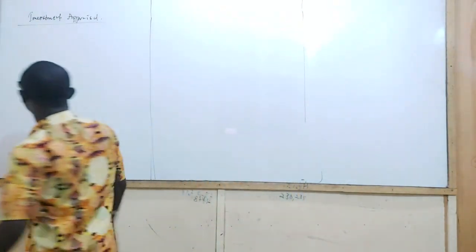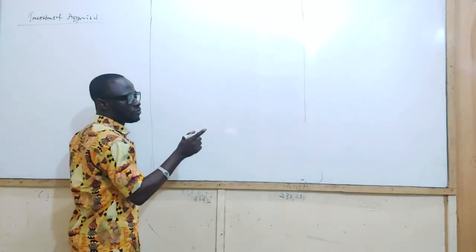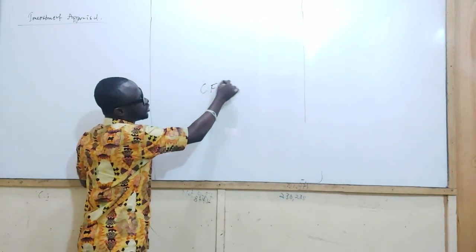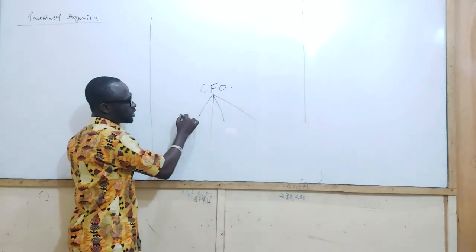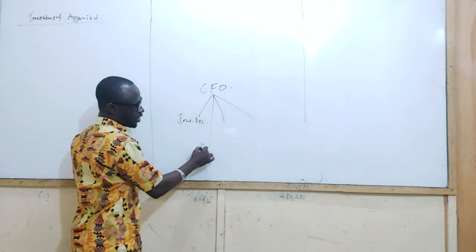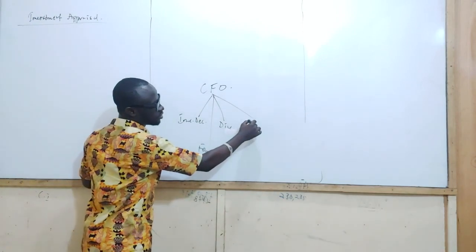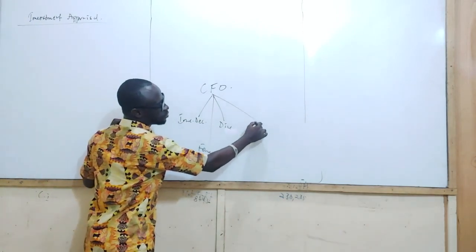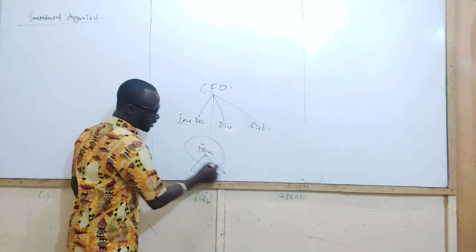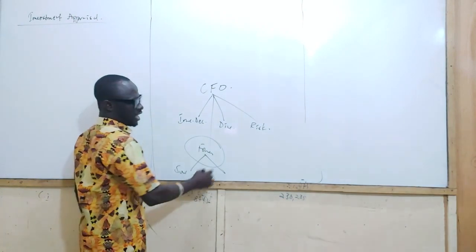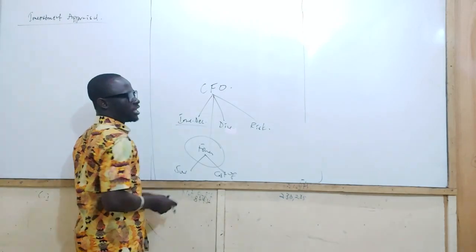Remember, in the introduction when we were doing the overview of the syllabus, I told you the financial manager or CFO makes four various decisions: the investment decision, financing decision, dividend decision, and risk management decision. We looked at the financing decision — where do we get the money from, sources of finance, and what is the cost of that money, the cost of capital. So now we want to go to investment decisions.